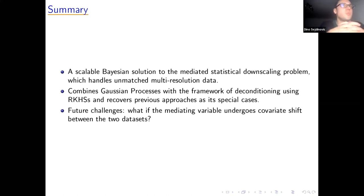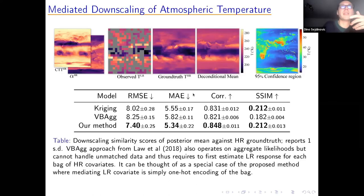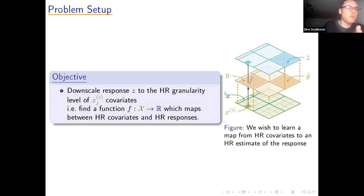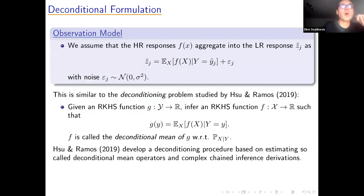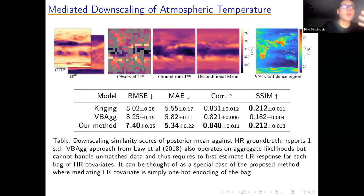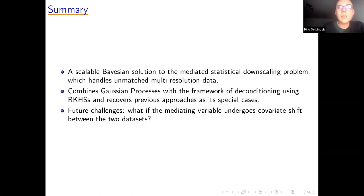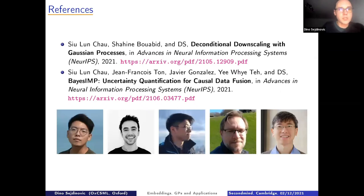In summary, this is a scalable Bayesian solution that can be combined with variational inference. It handles unmatched multi-resolution data by combining Bayesian models with the RKHS framework representing conditional distributions. A future challenge is that the distribution of the mediating variable is assumed to be the same across datasets — what if it undergoes covariate shift?